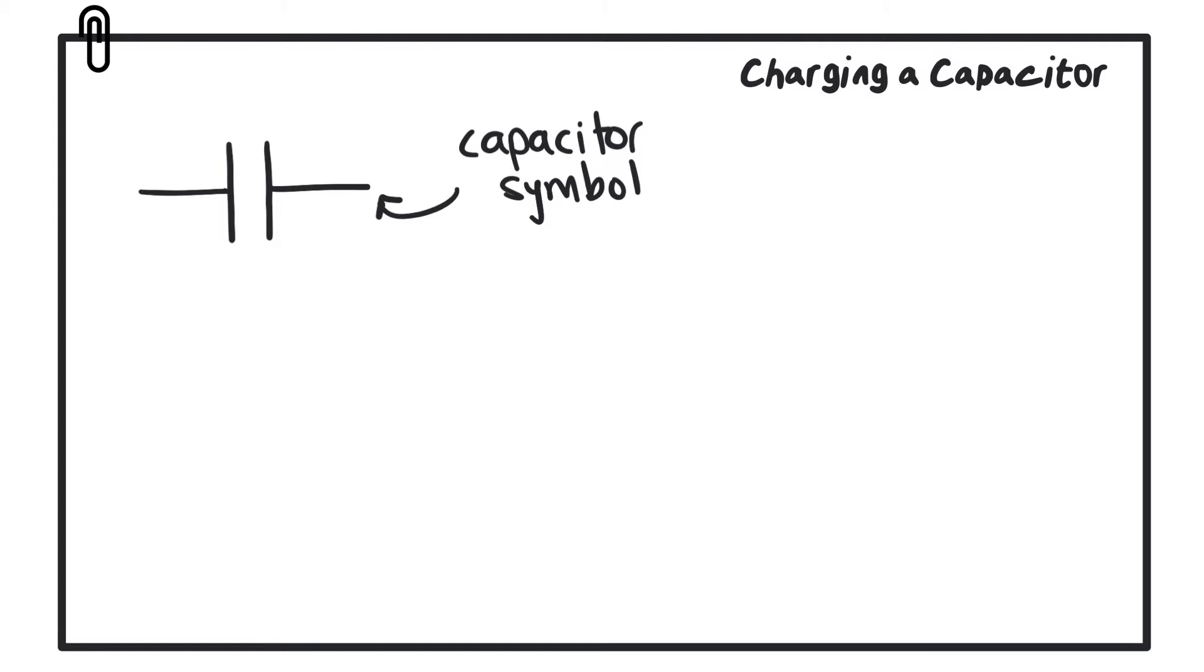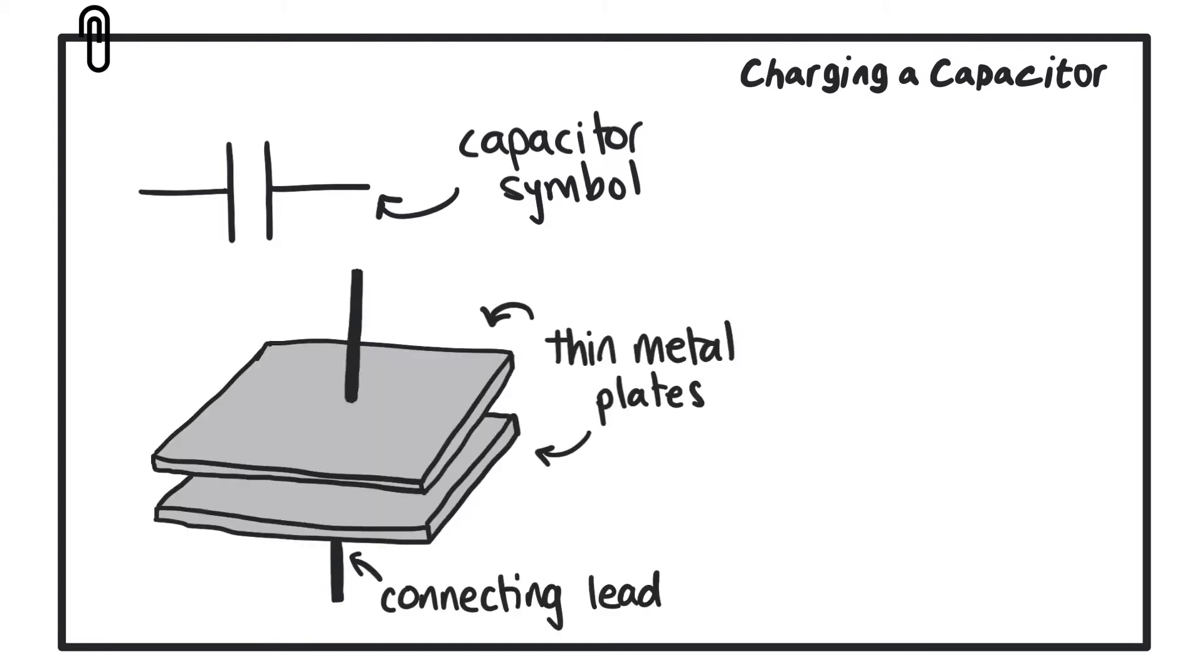In its simplest form, a capacitor is just two plates of thin metal foil that are separated by an insulating material such as plastic or waxed paper. This is then usually rolled up to save space.